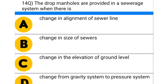Next question: the drop manholes are provided in the sewer system when there is — option A: change in alignment of the sewer line, option B: change in size of the sewer, option C: change in elevation of the ground, option D: change from the gravity system to pressure system. The correct answer is option C: change in elevation of the ground.